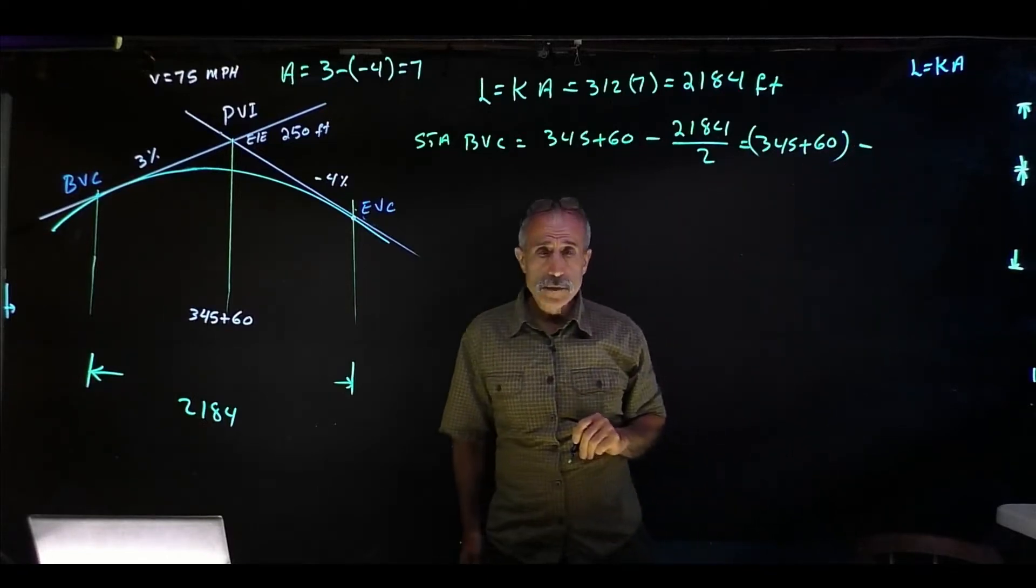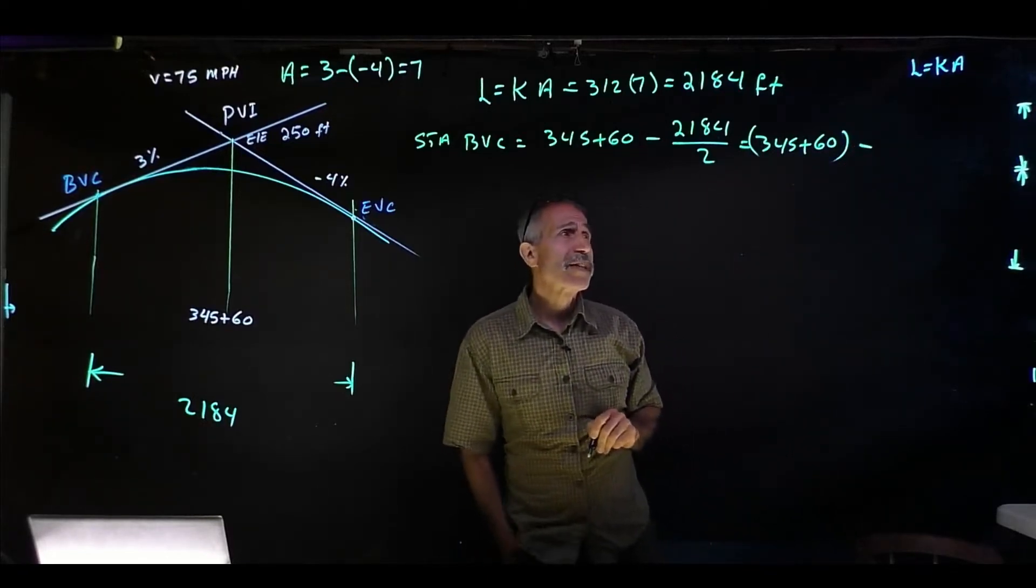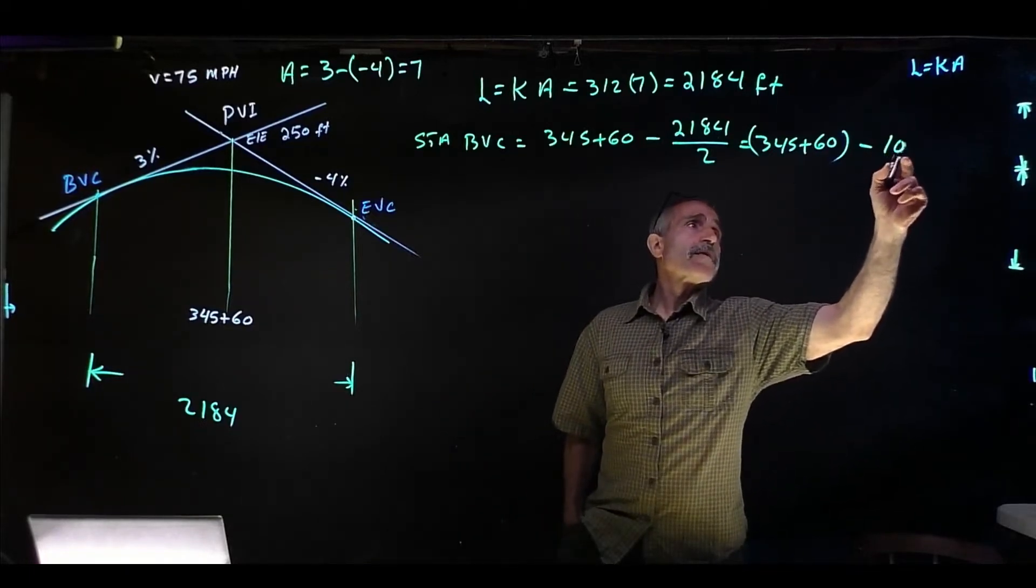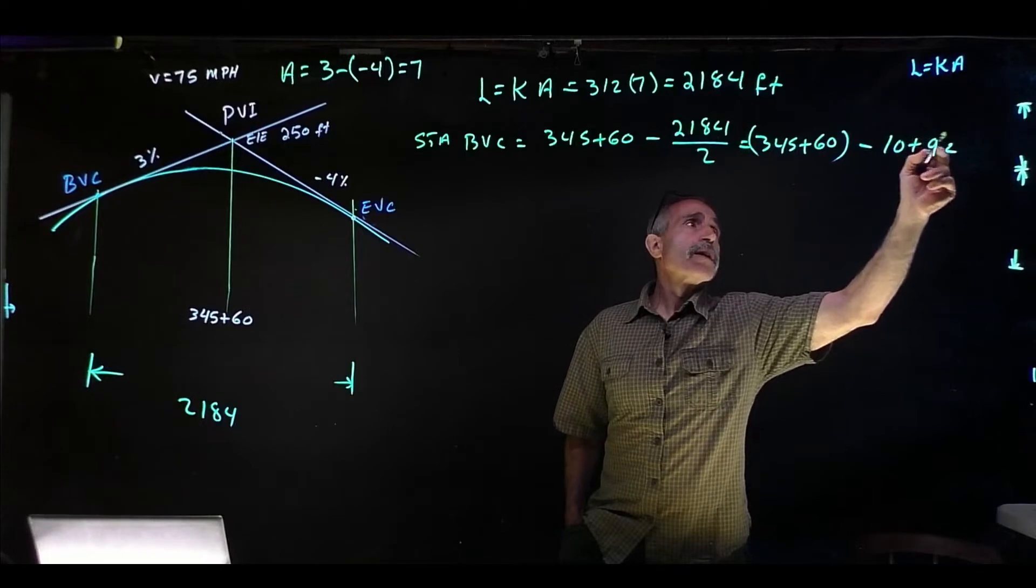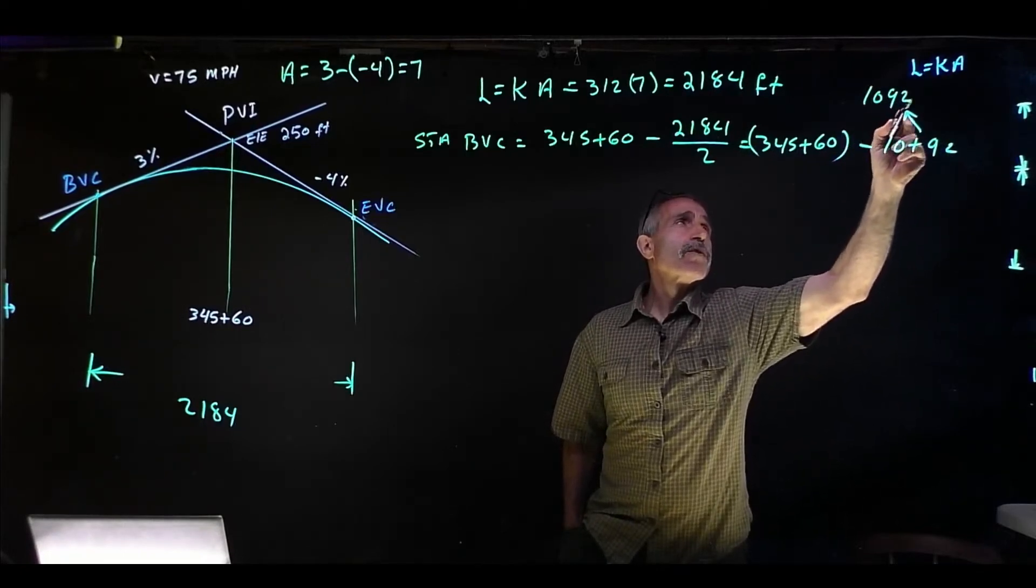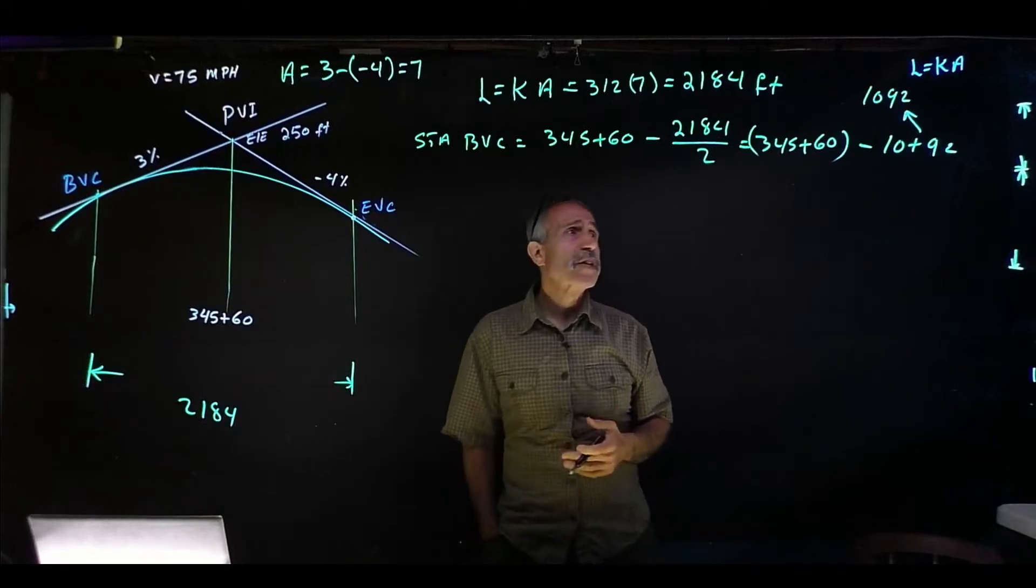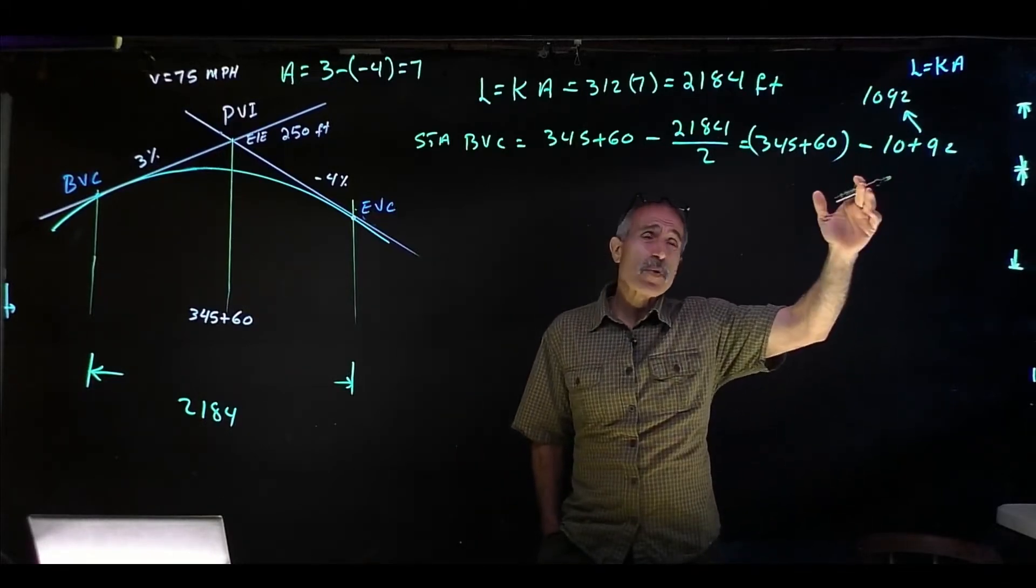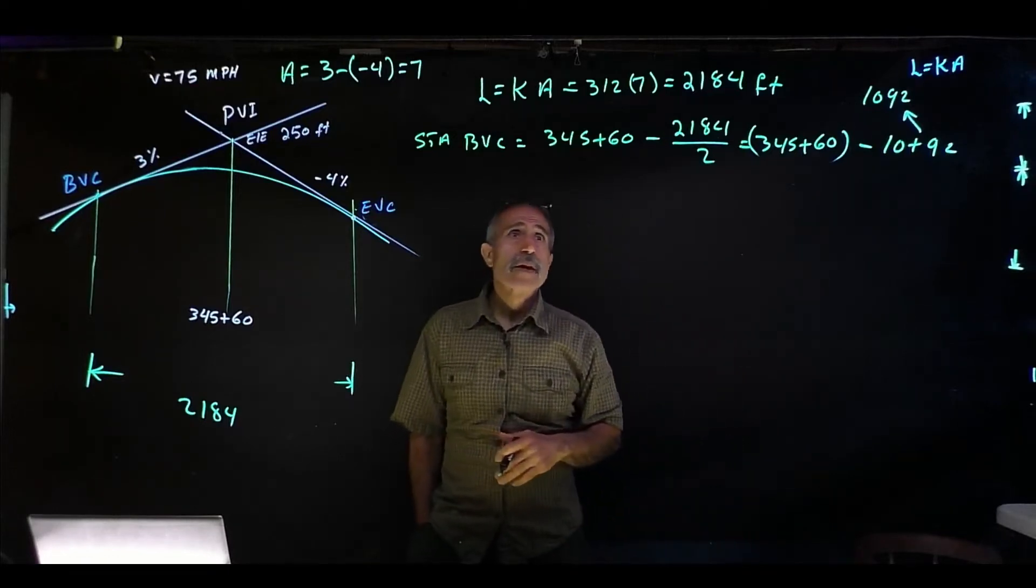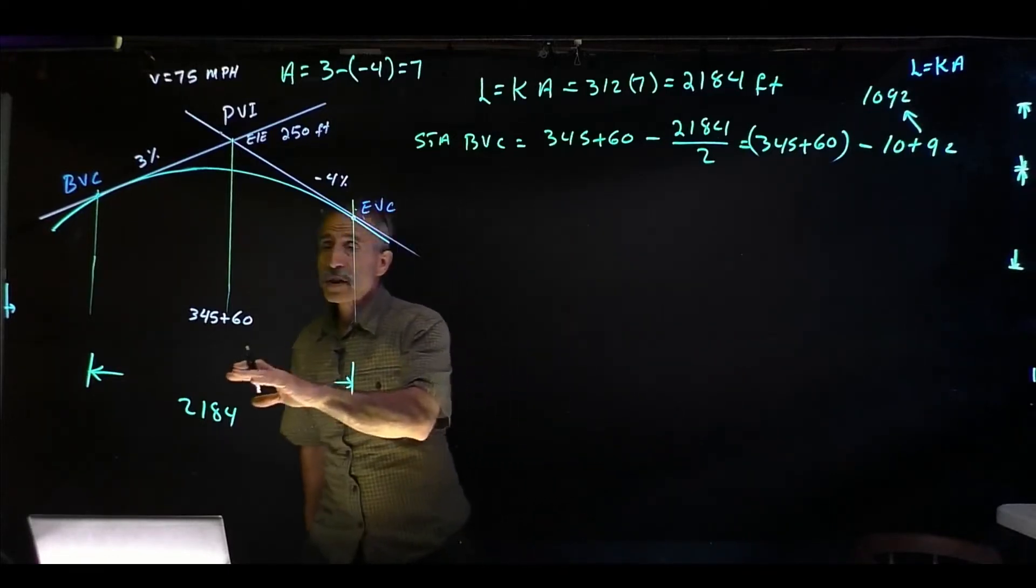If I simplify that, it becomes 345+60 minus 1092. So 1092, that means it's 10+92. Now this number is basically 1092. If I divide by 100, it becomes 10 stations, which means 10 times 100, and then you have 92 left over.